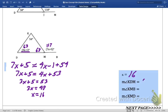KDM, 63 degrees, right there. KMB, the exterior angle, that's 117. And KMD, that's the other 63. We've got all four parts that we need.